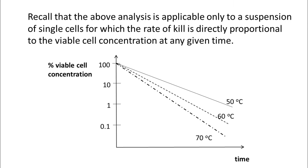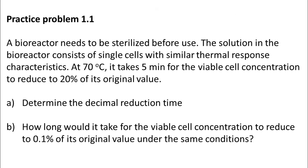At this point, a problem was assigned. Practice problem 1.1. It read: a bioreactor needs to be sterilized before use. The solution in the bioreactor consists of single cells with similar thermal response characteristics. At 70 degrees C, it takes 5 minutes for the viable cell concentration to reduce to 20 percent of its original value. Part A, determine the decimal reduction time. And part B, how long would it take for the viable cell concentration to reduce to 0.1 percent of its original value under the same conditions. This was the problem that was assigned when we finished up the previous lecture, lecture number 2. I hope you had a chance to work this out.